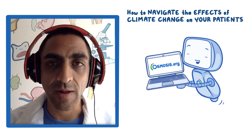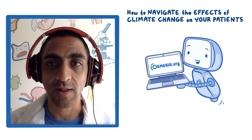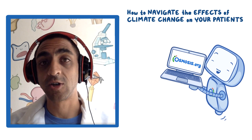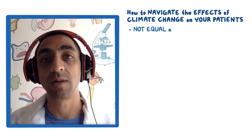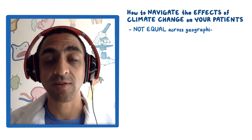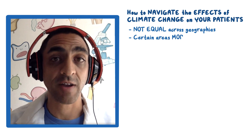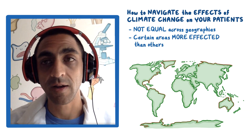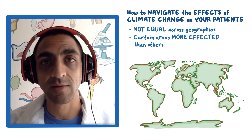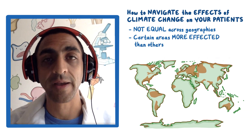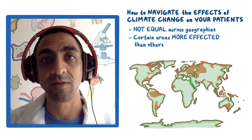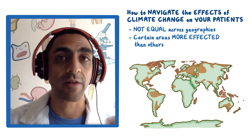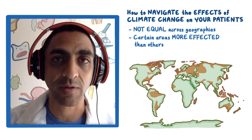When I think about climate change, I realized many years ago that the effects of climate change are not equal across geography. Certain areas are affected more than others — coastal areas, low-lying areas, island groups are affected much more than other areas.